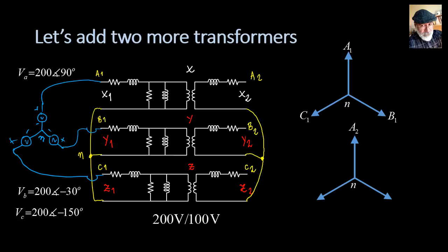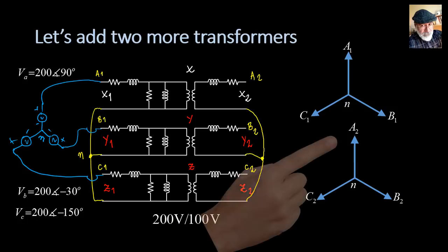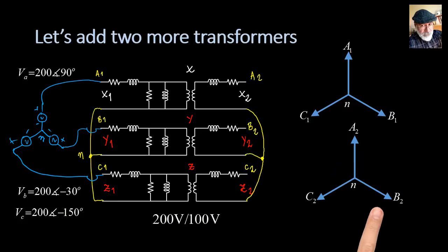You might ask: how do you know this is phase A of the secondary? It is a convention — we assign phase A of the secondary to the coil of the same transformer X that is connected to phase A of the primary. That is X2, so that is A2. This is a Y-primary, Y-secondary connection with no phase shift between neutral-to-A1 and neutral-to-A2. We call that a YY0 connection: uppercase for the primary, lowercase for the secondary, and zero is the phase shift.